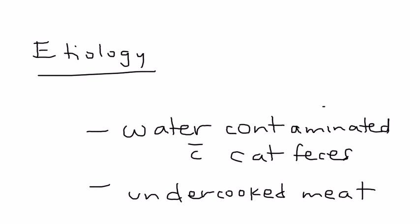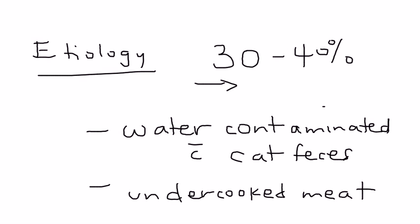Of all the women infected during pregnancy with toxoplasmosis, approximately 30–40% will actually go on to have an infected baby. So it's a pretty significant risk statistic.